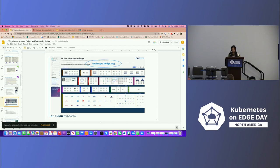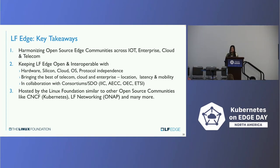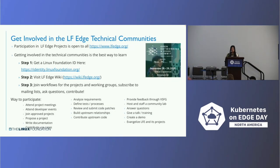The key takeaway is to harmonize the open source edge communities across IoT, Enterprise, Cloud, and Telco, keeping ElfEdge open and interoperable with CNCF and others — silicon, cloud, OS, protocol independent — hosted by the Linux Foundation, same as CNCF and LFN. To get involved: get an LF ID in about 20 seconds, visit the wiki, and join the working groups. There are many ways to participate, just like in CNCF.